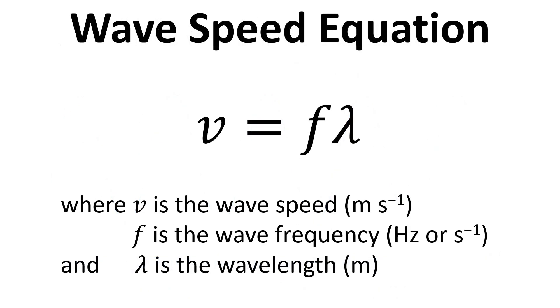Now the relationship between these three quantities is shown here. Wave speed equals wave frequency times wavelength. So v equals f times lambda and we can use this equation in different situations. If we're provided with two bits of information we can calculate the third bit of information and we may have to rearrange the equation to do that.